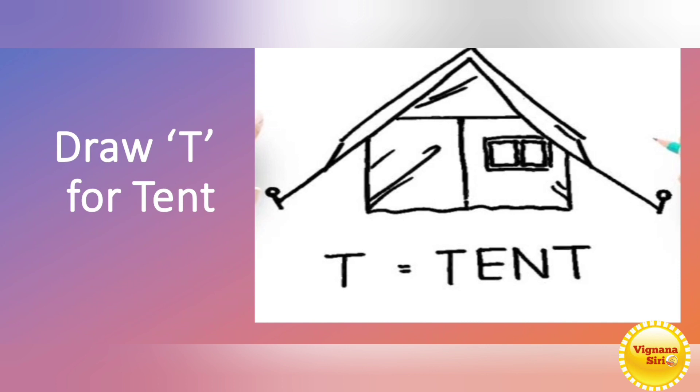Now drawing time. Draw T for tent. Are you all ready? So first write the capital letter T. Now from the middle, draw a left slanting line and a right slanting line touching that sleeping line. Now draw the two standing lines like this and covered with a sleeping line.